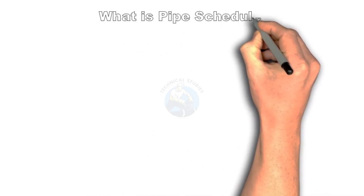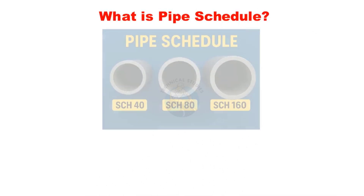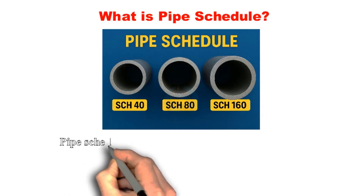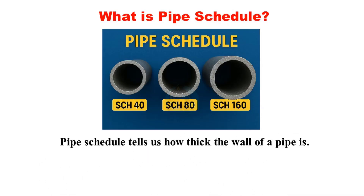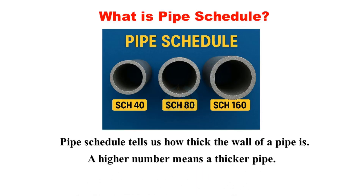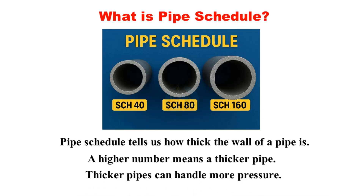What is pipe schedule? Pipe schedule tells us how thick the wall of a pipe is. A higher number means a thicker pipe. Thicker pipes can handle more pressure.